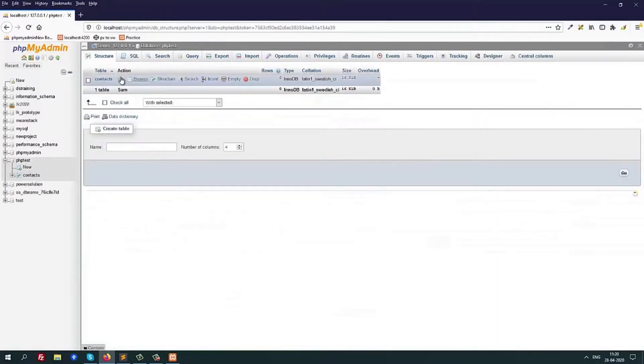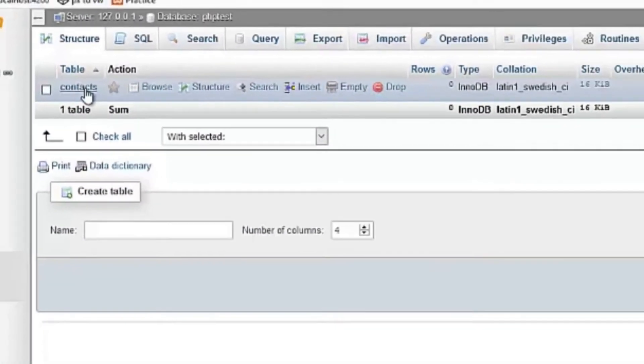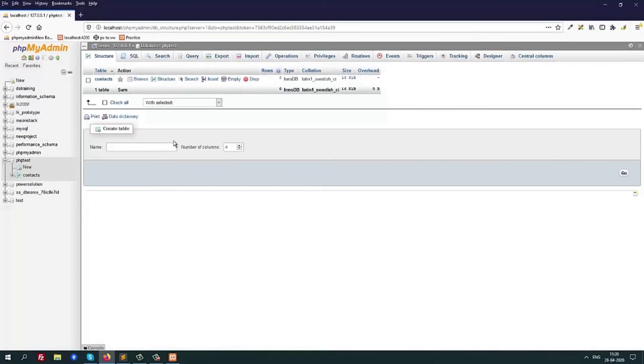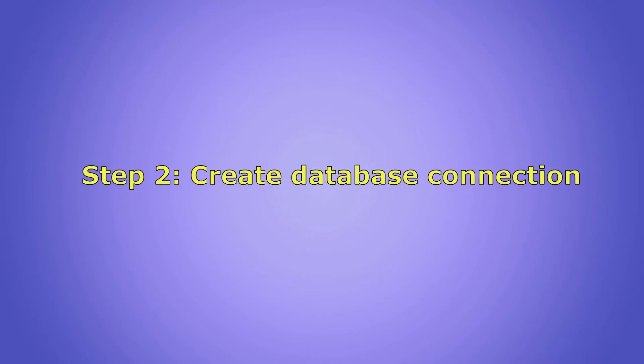If we go to phptest, here we have the contacts table. The database creation part is done. Now we will go to the coding part. To connect our application with the database, we can use MySQLi or PDO. MySQLi is only for MySQL, whereas PDO can be used with over 12 different types of databases. PDO has the advantage because if we want to switch our database we can easily do so. Both are object oriented. In our case I will use PDO.